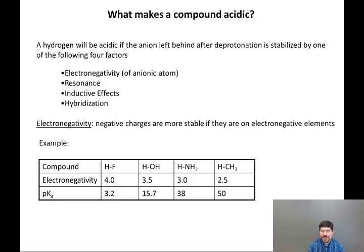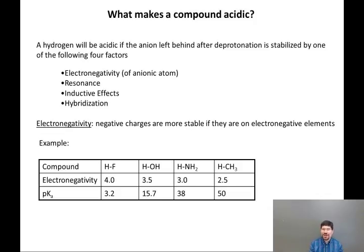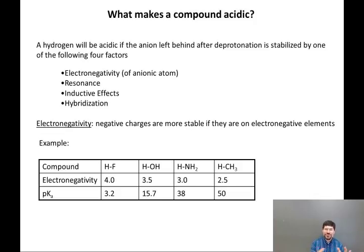We will start by looking at electronegativity. The basic definition of electronegativity is how much does an element want to pull electrons towards itself. If you have an element that wants to pull electrons towards itself, it is relatively happy having electrons. A negative charge represents extra electrons, so electronegative atoms should be happier with a negative charge.